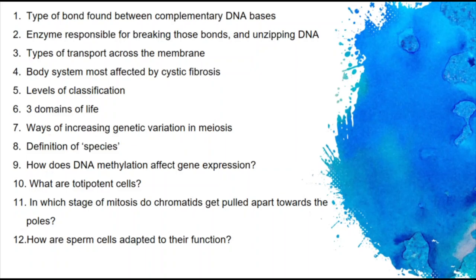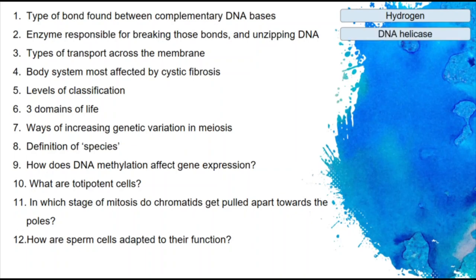The type of bond found between complementary DNA bases is a hydrogen bond — it's quite a weak bond. You've got two bonds between A and T, and three bonds between C and G. The enzyme responsible for breaking those bonds and unzipping DNA is DNA helicase.